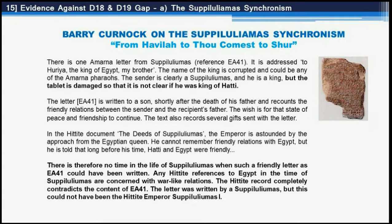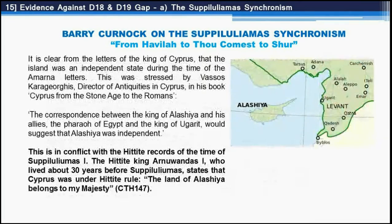It is clear from the Amarna letters that Cyprus — Alashiya — was an independent state during that period, stressed by Vassos Karageorghis, Director of Antiquities in Cyprus, in his book 'Cyprus from the Stone Age to the Romans.' The correspondence between the king of Alashiya and his allies the pharaoh of Egypt and the king of Ugarit suggests Alashiya was independent. This conflicts with Hittite records of the time of Suppiluliuma the First, as the earlier Hittite king Arnuwanda the First states: 'The land of Alashiya belongs to my majesty' (CTH 147).